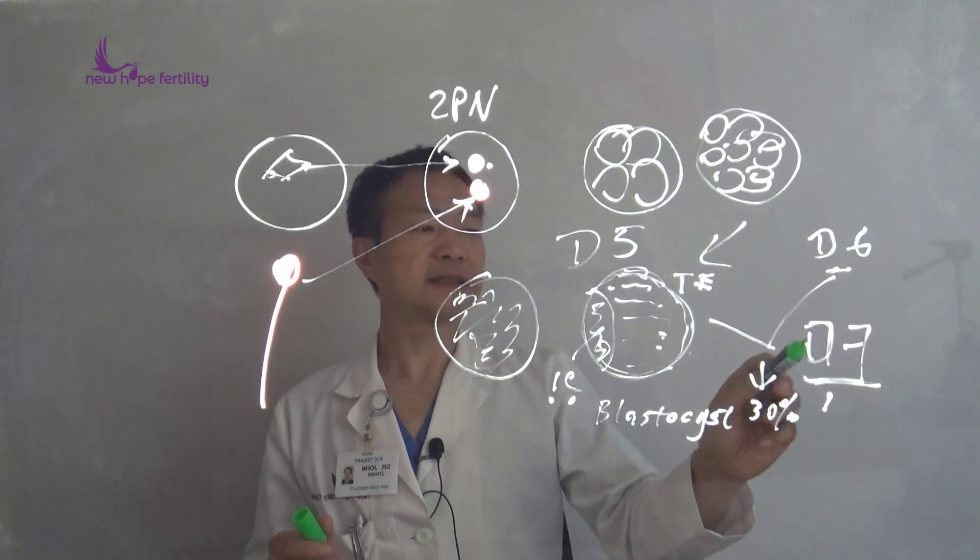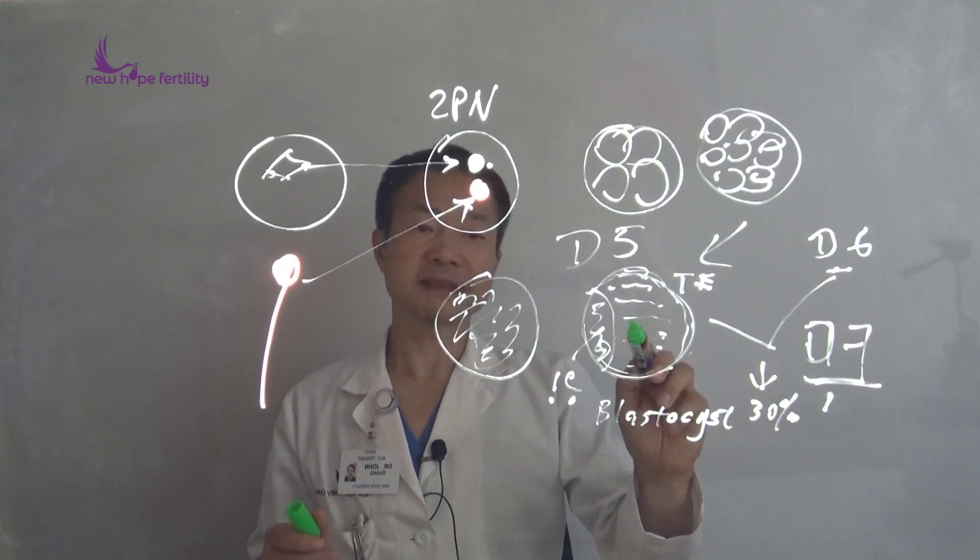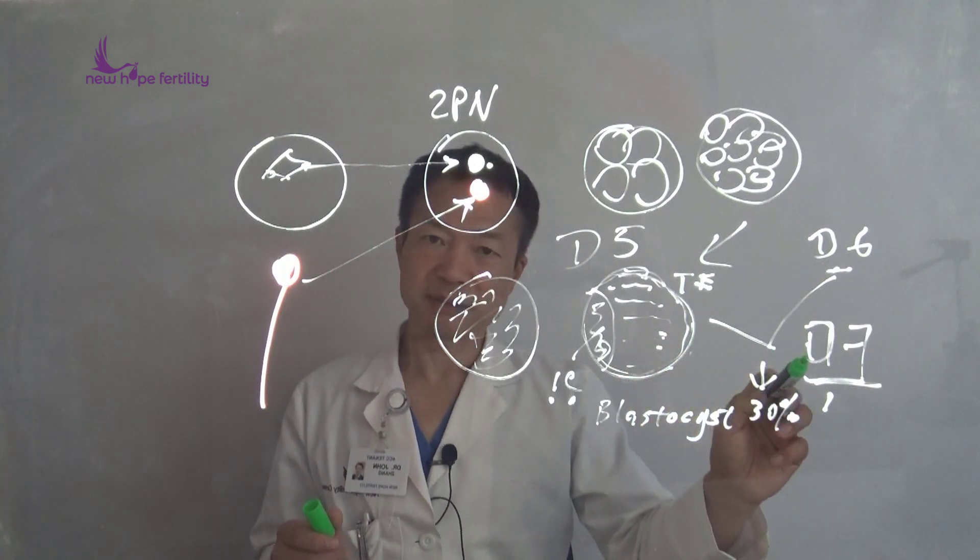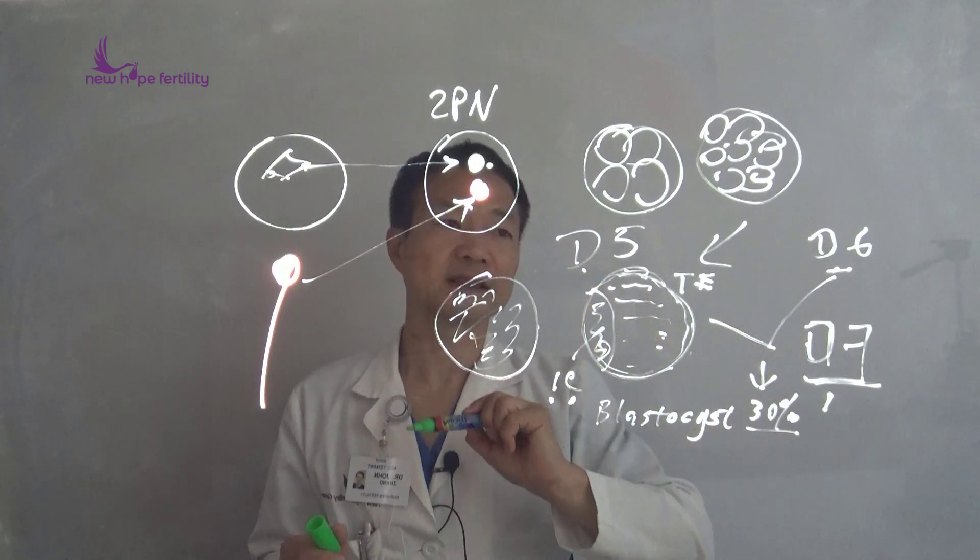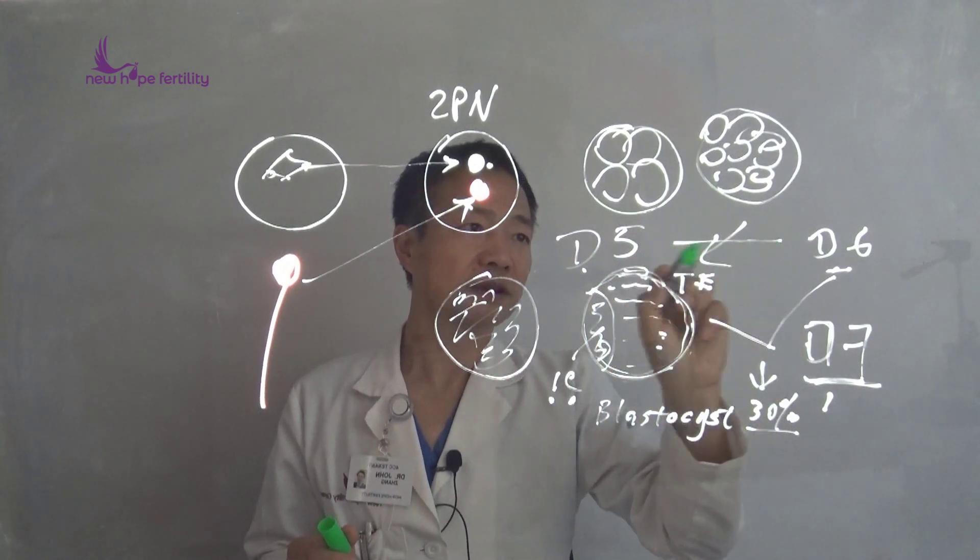This means that if day 7 embryos made it to that stage, they can still make babies, but the chance is about 30% below day 5 and day 6 embryos. Day 5 and day 6 have almost no difference in success rate.